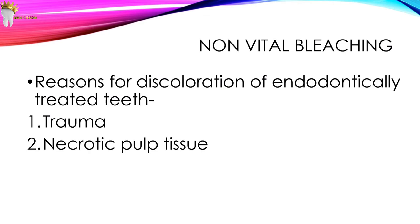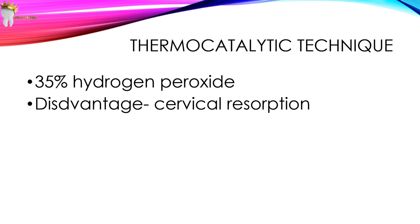Non-vital bleaching refers to bleaching of endodontically treated teeth. These teeth can be discolored from blood products caused by trauma before root canal therapy, or by necrotic tissue accidentally left in the pulp chamber. A historical bleaching method called the thermocatalytic technique used 35% hydrogen peroxide applied to the pulp chamber; heat was applied several times during a 30-minute period to enhance the action of the solution, after which it was rinsed out. The disadvantage here was cervical resorption.